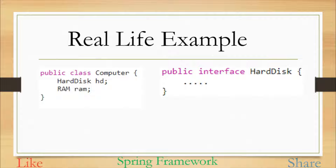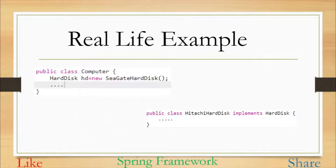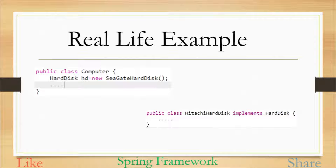Now let's implement this with Java coding. This Computer class contains HardDisk and RAM as two instance variables, so these two objects will be required to create an object of Computer. One way is to use the new keyword and create the object inside the Computer class itself — like here, we have hd = new SeagateHardDisk. The moment you use the new keyword to create the object it becomes tightly coupled. Now if in the future you want to change the company of hard disk, say to Hitachi, that means you want to use some other implementation, which will require code changes and is not a good practice.